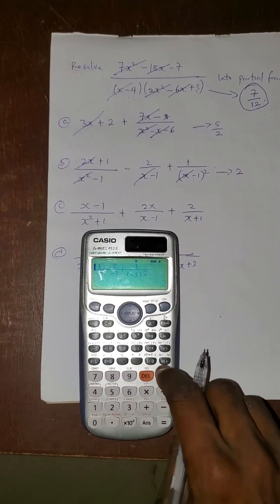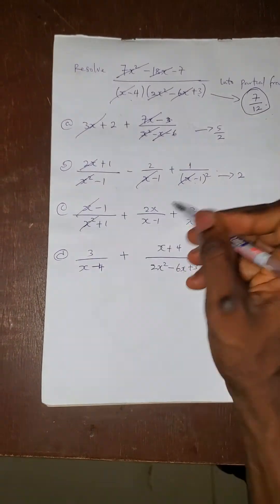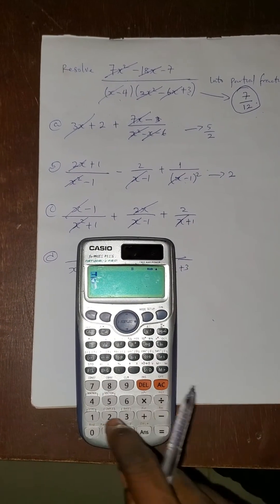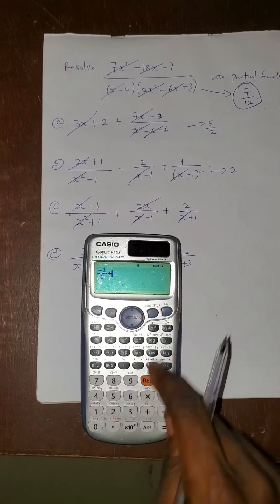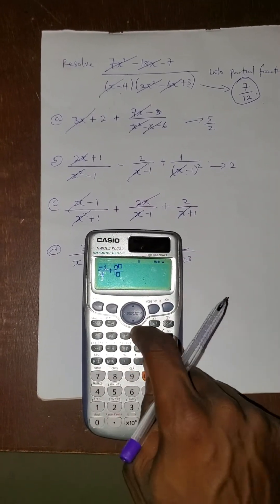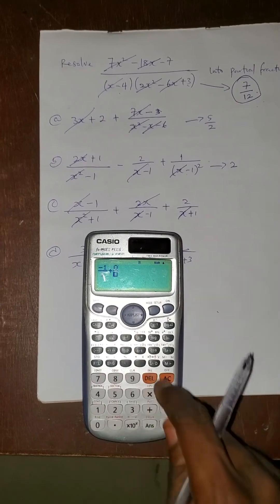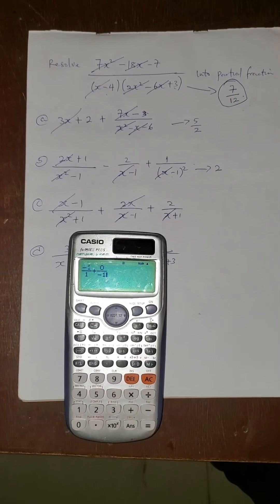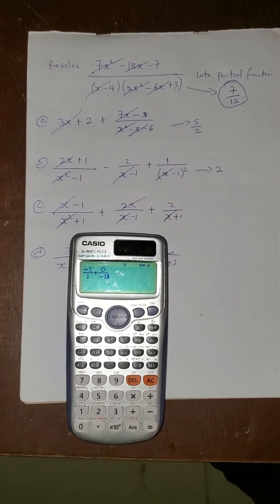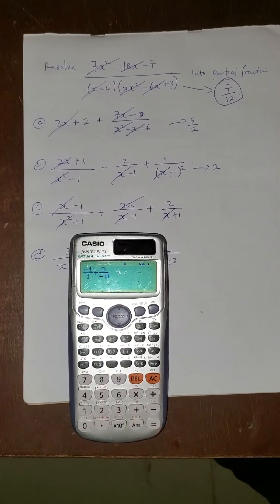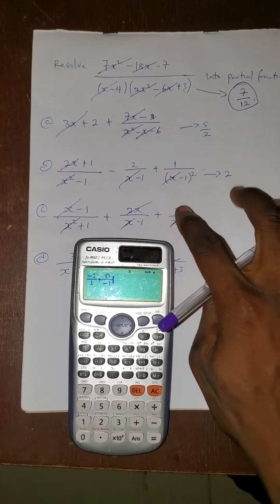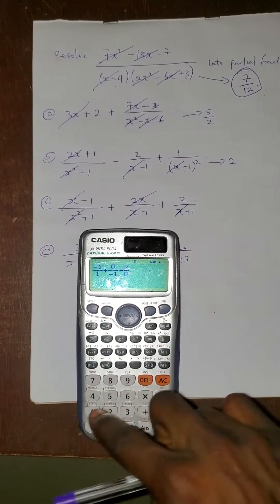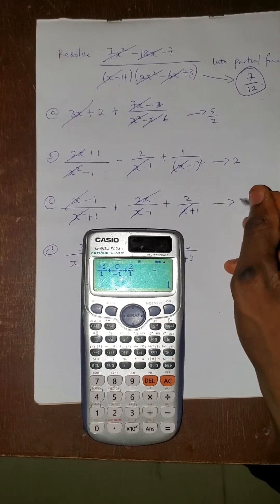So the value here is 2. Now let's go for the next option. Cancel this, cancel this, cancel this, cancel this, cancel this. What we have is minus 1 over 1, then plus 0 over minus 1. The reason we cancel them like that is because we made x equal to 0. So since x is 0, any number multiplied by x will also be 0. Then plus, using the fraction button, 2 over 1. Press equals — this one gives us 1.